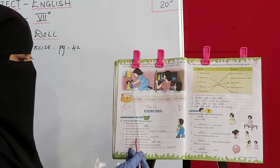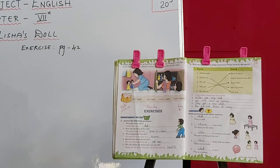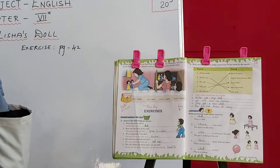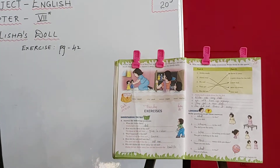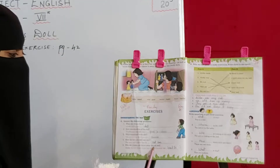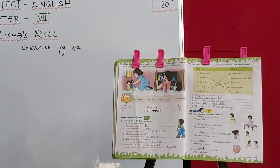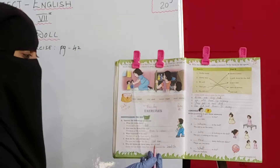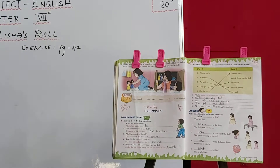Then how did the new doll look like? New doll kaise dikhai di thi? Same as the old one. So the new doll looked like the old one. Next: why did Alicia not throw away her doll? Because she loved it. Wohu apni old doll se bhi bhoat pyar karti thi. That's why she didn't throw away the doll.